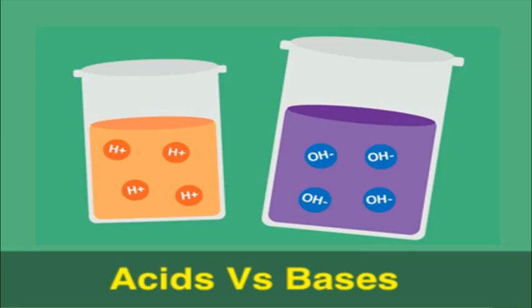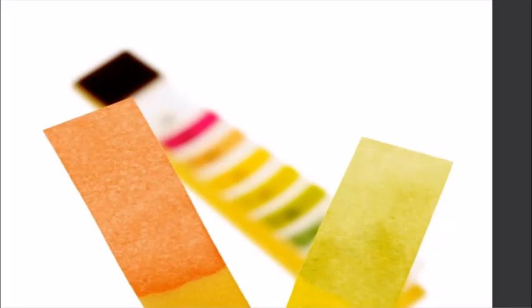If we compare acids and bases and dissolve them in water, we see that acids have H⁺ ions as their main constituent, and bases have OH⁻ ions as their main constituent. From this, we can also identify whether a substance is an acid or a base.